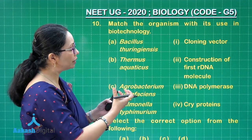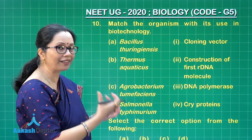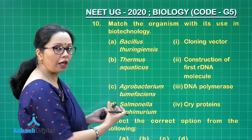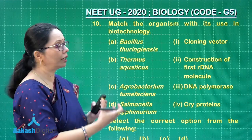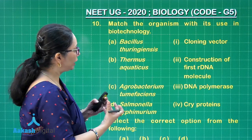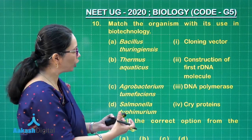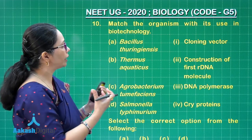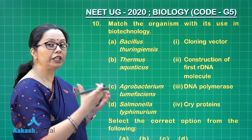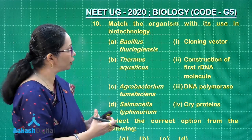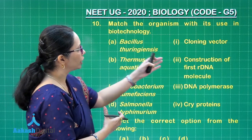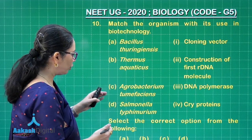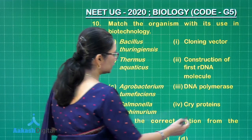Salmonella typhimurium was the bacterium from which an antibiotic-resistant gene was taken out of its plasmid to prepare a recombinant DNA molecule, which was then put into E. coli, conferring antibiotic resistance to it as well. This was the initial experiment of Stanley Cohen — the construction of the first recombinant DNA molecule. The correct answer is the first choice.